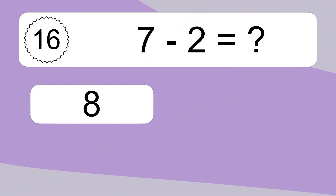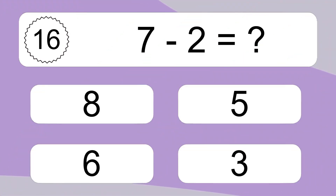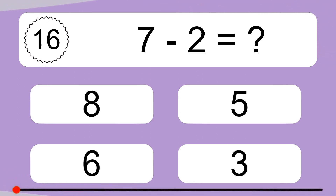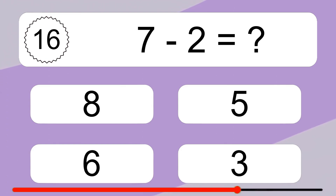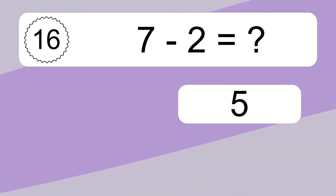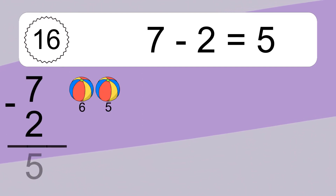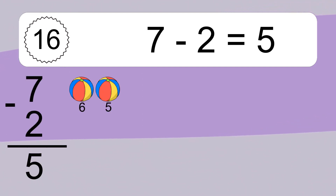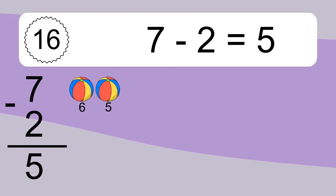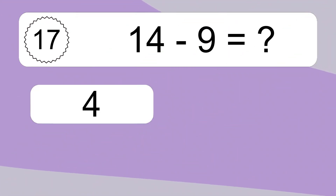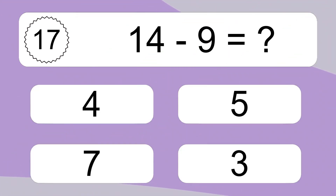7 minus 2 equals what? 7 minus 2 equals 5. Let's count it! 6, 5.